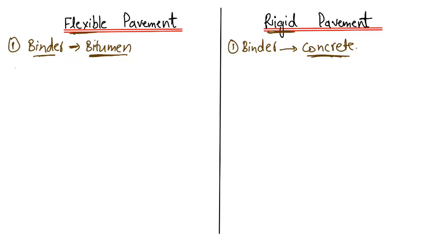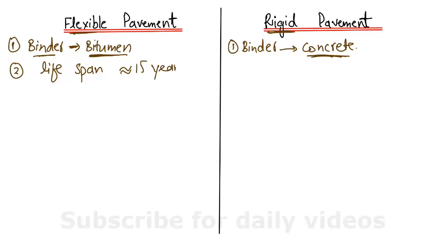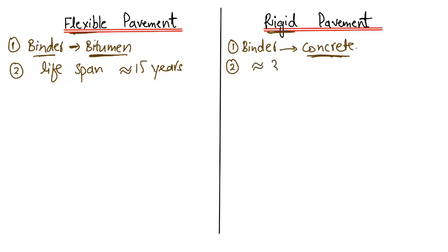The second difference is the lifespan. For flexible pavement, the lifespan is usually around 15 years. But in the case of rigid pavement, where concrete is the binding material, the lifespan is usually in the range of 30 years. This means rigid pavements are more durable and long-lasting.